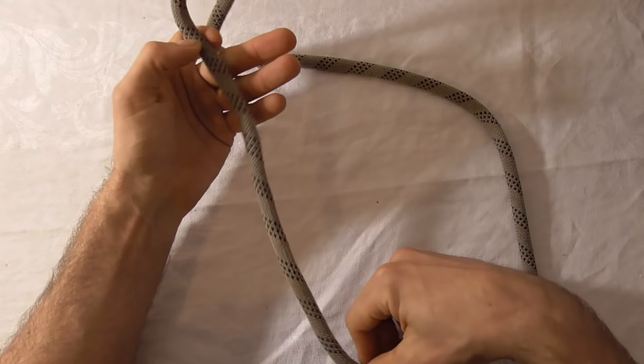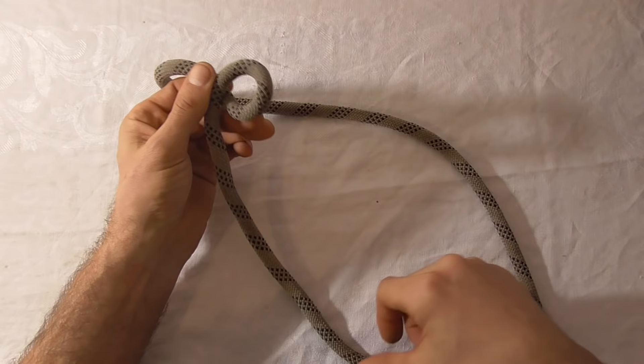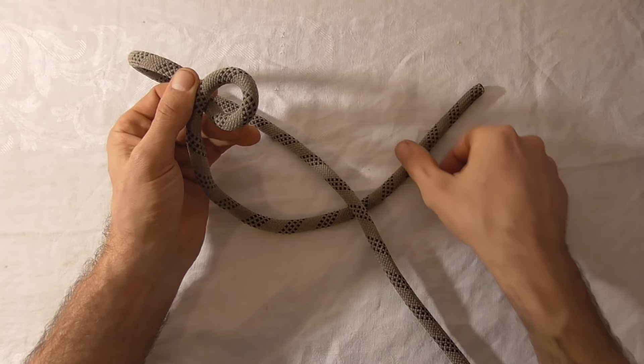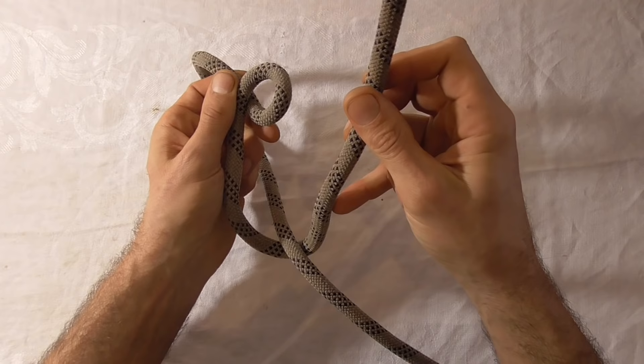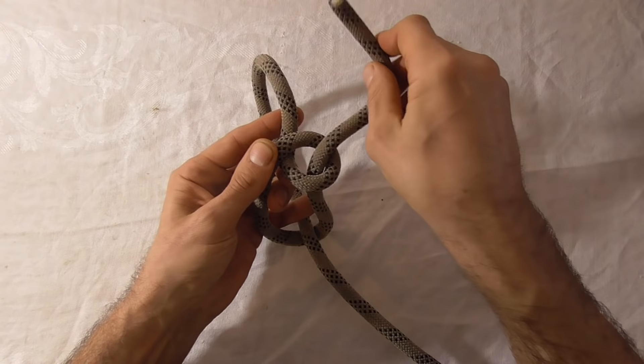Then using your working end, take it around the standing part of your rope first. That's going to form the loop of your bowline. Then just tie your bowline as per usual, up through that first loop that you created, around the back.